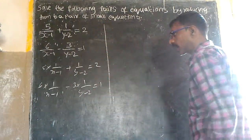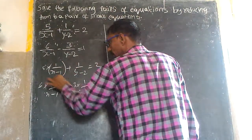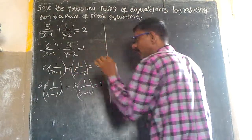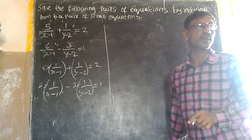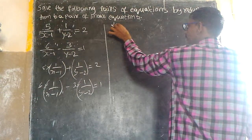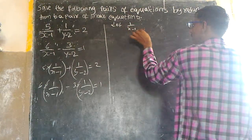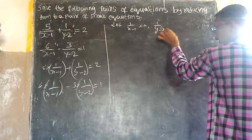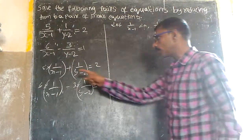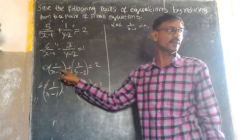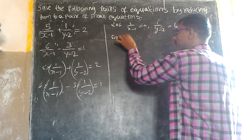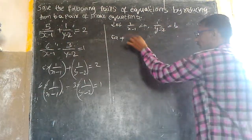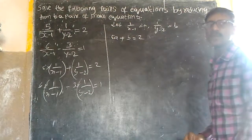We are ready to reduce the equations. Let this be a and this be b. We need linear equations, so if we write: 1 by (x minus 1) is equal to a, and 1 by (y minus 2) is equal to b. Then equation 1 reduces to 5a plus b is equal to 2.